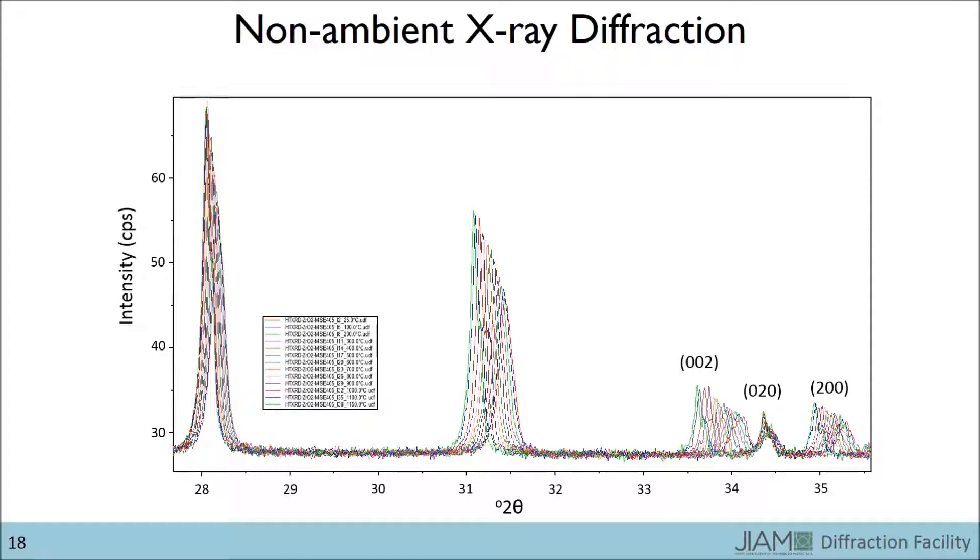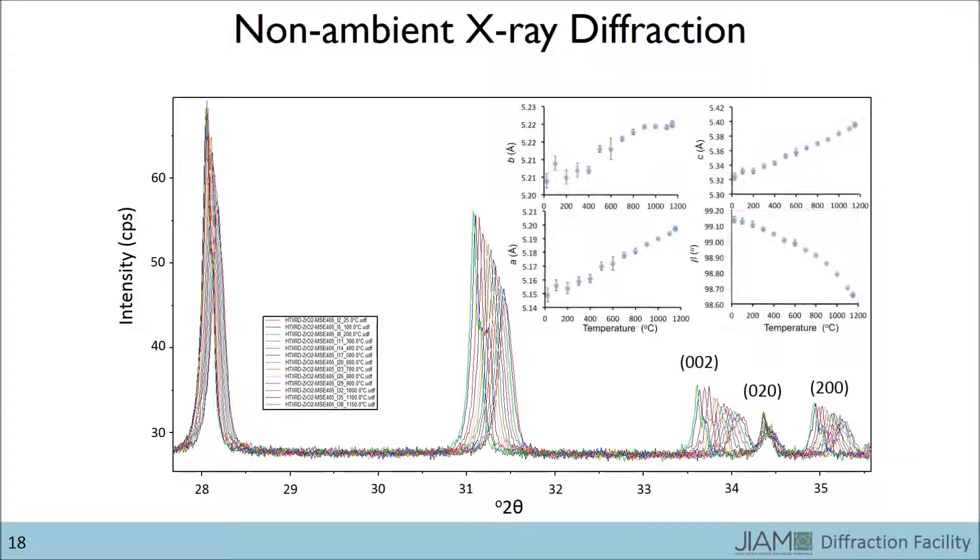We can see that the peaks for the 002 and 200 planes shift to lower angles with increasing temperature, while the 020 peak remains relatively unchanged. In a single series of experiments, values for each lattice parameter can be determined for each temperature.